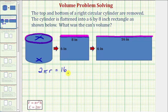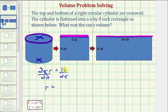If we solve this equation for r, we can then determine the volume of the right circular cylinder. Dividing both sides by two pi, we get r, the radius, is equal to 16 divided by two, which equals eight, so r equals eight divided by pi inches.